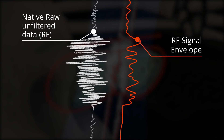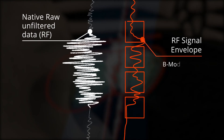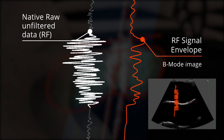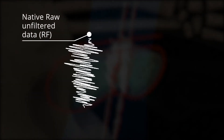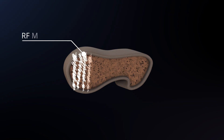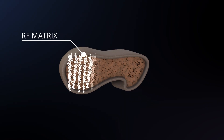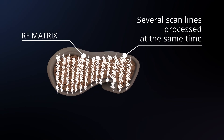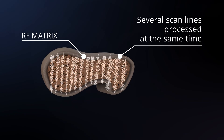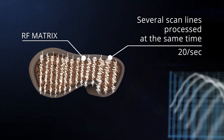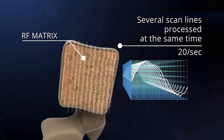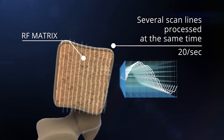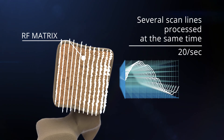The BMODE image is obtained through an averaged envelope derived from the unfiltered RAW signal sent by the probe. REMS analysis is based instead on the parallel processing of the native unfiltered RAW signals of several scan lines, with about a 20 frames per second frequency rate.